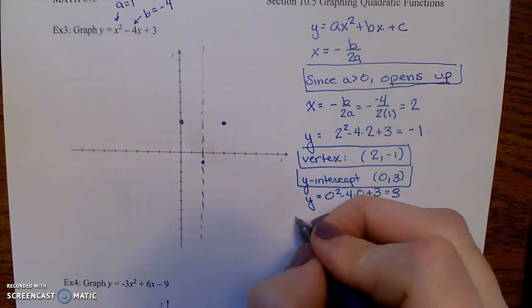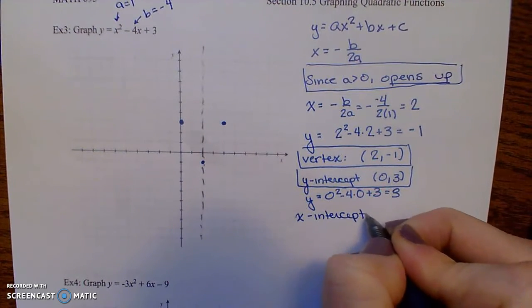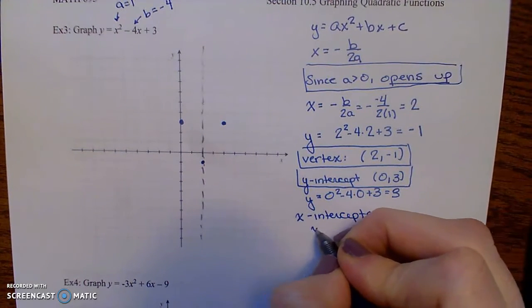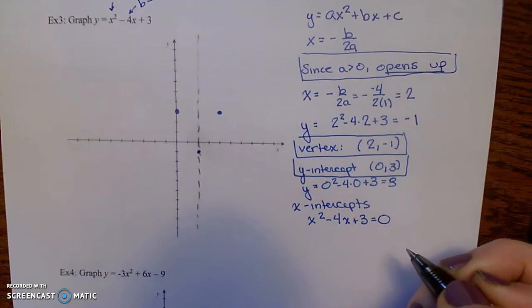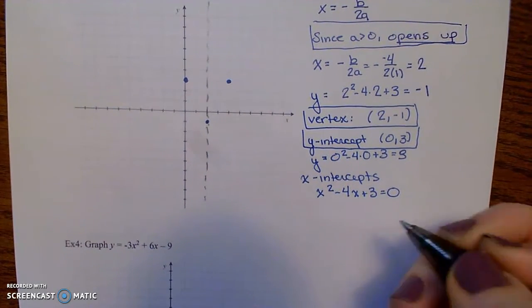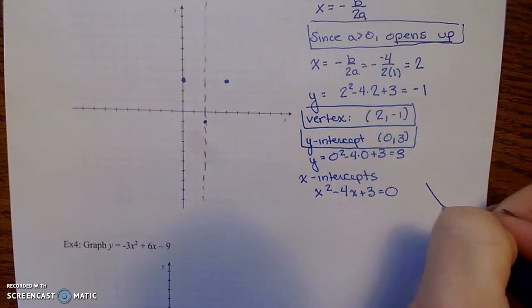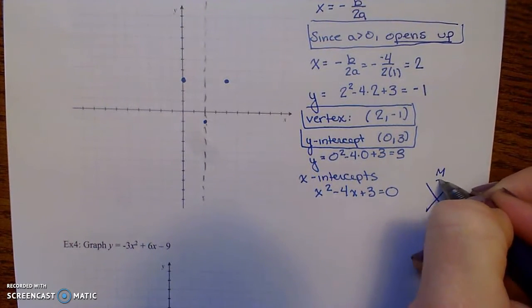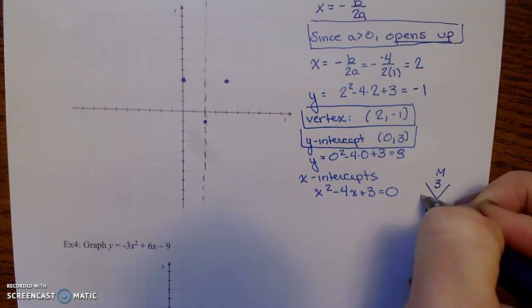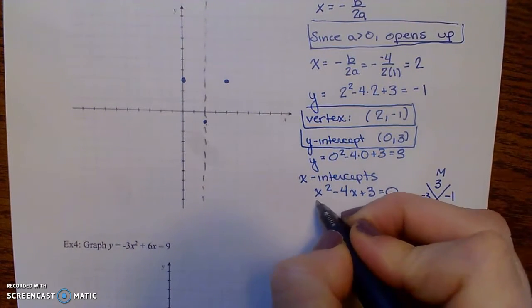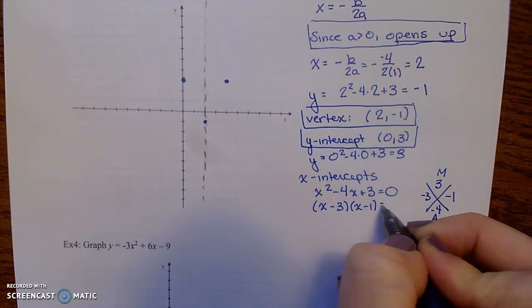Now let's calculate the x-intercepts. We'll do x squared minus 4x plus 3 equals 0. And that's a quadratic equation that we can use whatever method you want to solve. I think I can factor that because I can think of two numbers that multiply to 3 and add to negative 4. That would be negative 3 and negative 1. So this would be x minus 3 times x minus 1 equals 0.